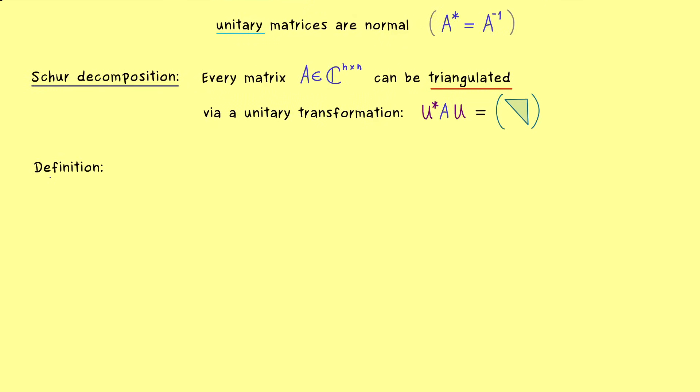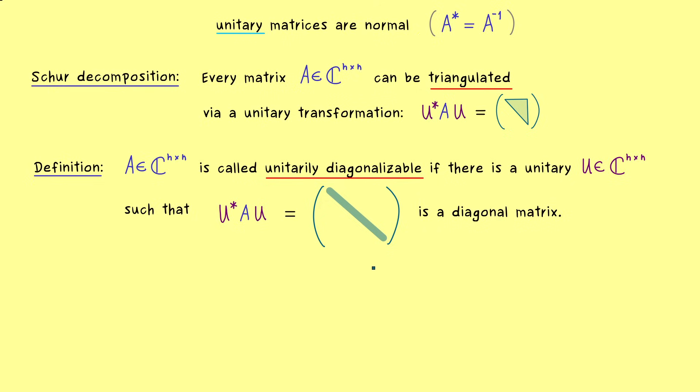So A is called unitarily diagonalizable if there exists a unitary matrix U that brings it into diagonal form. So this means we have a matrix U and the same formula as in the Schur decomposition. The only difference is now that the output is even simpler because it's just a diagonal matrix. So all the entries except the ones on the diagonal are zero. And please note that we already know that an implication of this is that we have the eigenvalues of the matrix A on the diagonal.